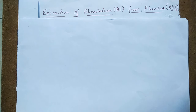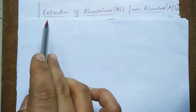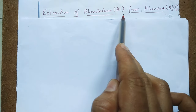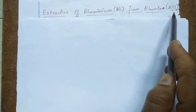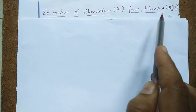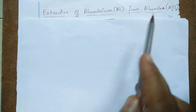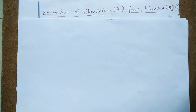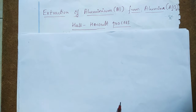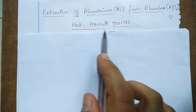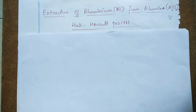Hi students. In today's video I am going to explain another important concept: extraction of aluminium from aluminium oxide, or alumina. This process is also known as the Hall-Héroult process.